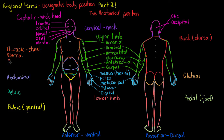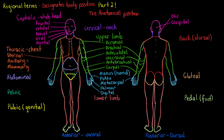Moving on to your thoracic region — where your chest is — we've got the sternal, axillary, and mammary regions, all subdivisions of the thoracic region. Just drawing in the different subdivisions to make it easier to visualize: sternal is in the middle, axillary regions are on the side where our underarm area is, and mammary is more in the middle but lateral to the sternal region, where our pectoral muscles are.